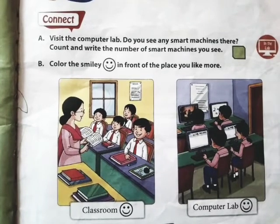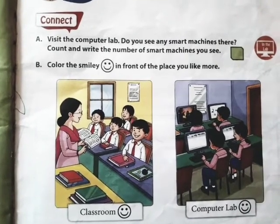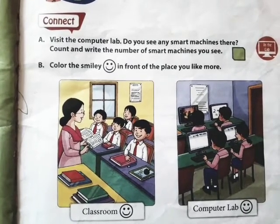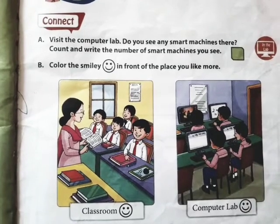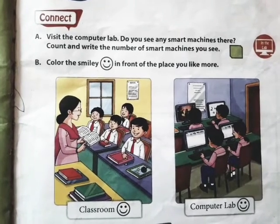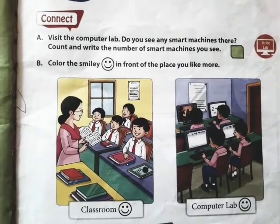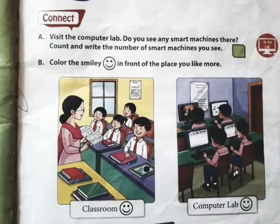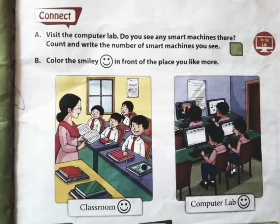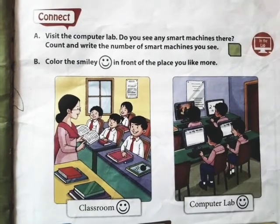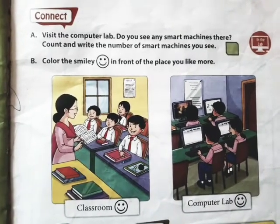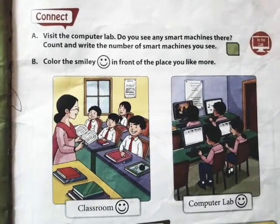The B question is for only those who have the textbook, because we have to color in the textbook. Color the smiley in front of the place you like more. Dear students, do you like the classroom more or the computer lab? If you like the computer lab, you can color that smiley with any color. And if you like the classroom, then color the smiley of the classroom.